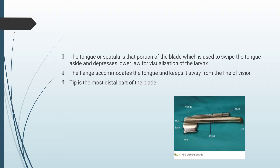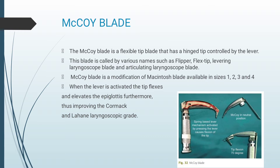The image of the Miller blade shows the flange and web base, heel, tongue part, light bulb, and the tip of the blade. Moving on to a special blade — the McCoy blade. The McCoy blade is a flexible tip blade that has a hinged tip controlled by a lever. It is called by various names such as flipper, flex tip, levering laryngoscope blade, and articulating laryngoscope blade. This blade is a modification of the Macintosh curved blade, available in sizes 1, 2, 3, and 4. When the lever is activated, the tip flexes and elevates the epiglottis, improving the Cormack and Lehane laryngoscopic grade.